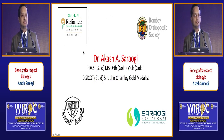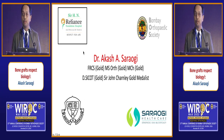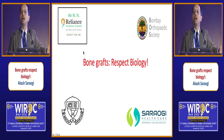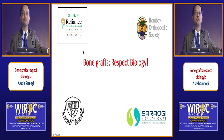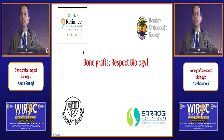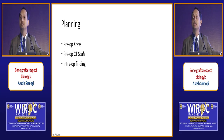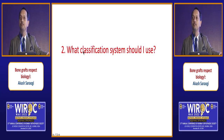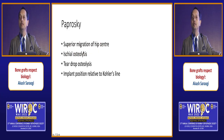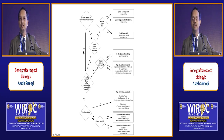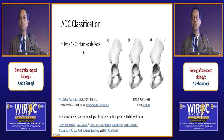Bone grafts respect biology. How do I evaluate the defect? Pre-op X-ray, pre-op CT scan, and intra-operative findings give the real picture of bone loss. What classification should I use? We are all trained in the Paprosky classification, but many find it complex. A simpler system now used in western literature is the ADC classification: Type 1 contained defect, Type 2 uncontained but no structural loss, Type 3 uncontained more than 1 cm with structural loss, and Type 4 pelvic discontinuity.